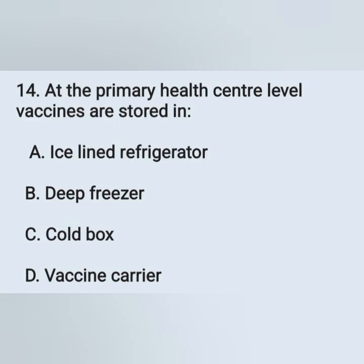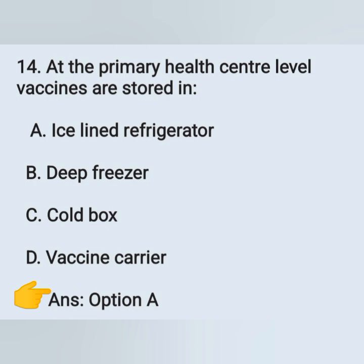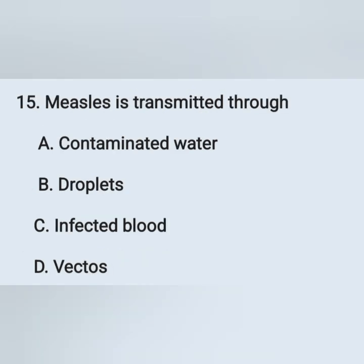Next question: at the primary health center level, vaccines are stored in — option A: ILR (ice-lined refrigerator), option B: deep freezer, option C: cold box, option D: vaccine carrier. At the primary health center level, vaccines are stored in the ice-lined refrigerator — option A is the correct answer.